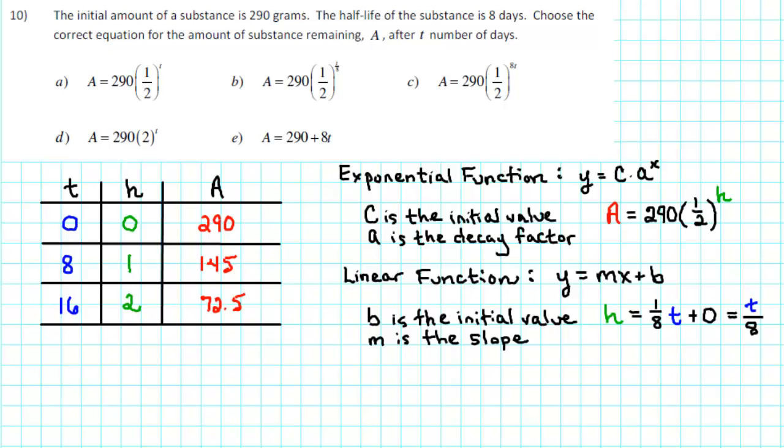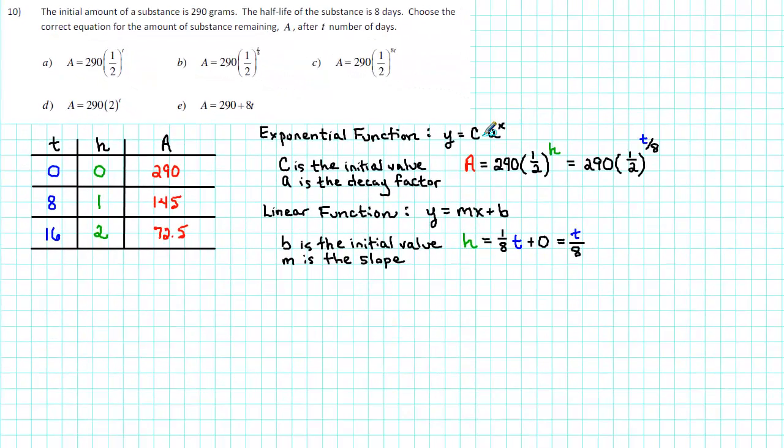Now we're ready to write our equation for A in terms of T. Notice that we have A in terms of H, and we've got H in terms of T. So we can just substitute T over 8 for H in the first equation. That gives us A equals 290 times 1 half raised to the T over 8. We see that B is the correct answer.